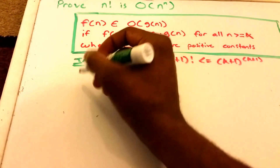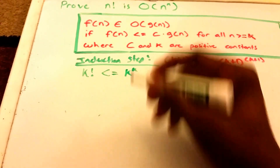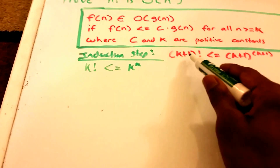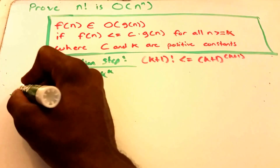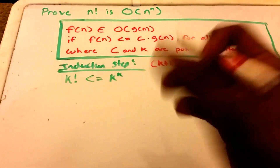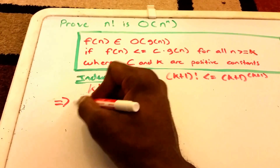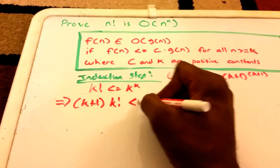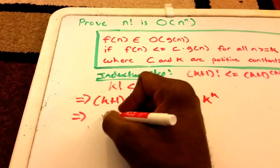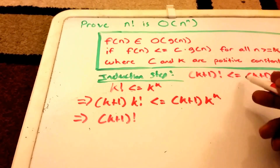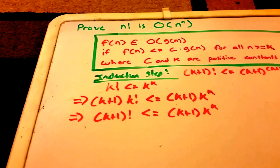Now that's where the work is done. We start with the induction hypothesis: k factorial is less than or equal to k to the power of k. I want to get the left-hand side to look like the left-hand side of the induction step, so I'm going to multiply both sides by k plus 1. That gives us k plus 1 factorial is less than or equal to k plus 1 times k to the power of k, which is pretty close but not exactly what we want yet.